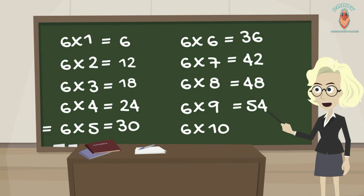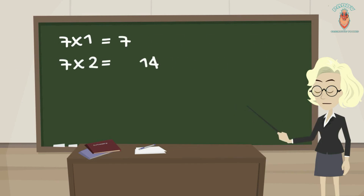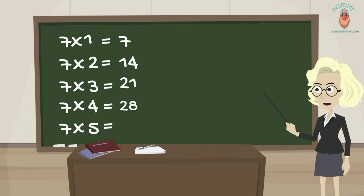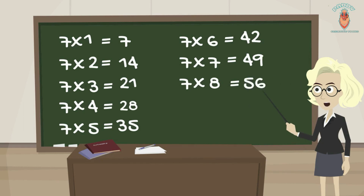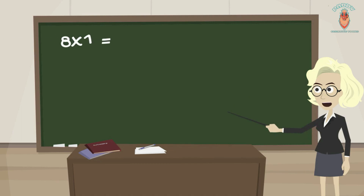6 10s are 60. 7 1s are 7, 7 2s are 14, 7 3s are 21, 7 4s are 28, 7 5s are 35, 7 6s are 42, 7 7s are 49, 7 8s are 56, 7 9s are 63, 7 10s are 70.